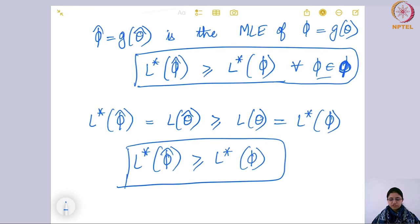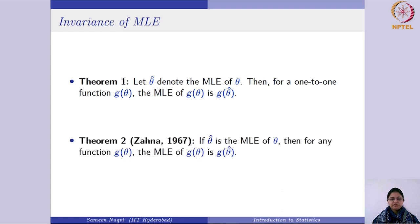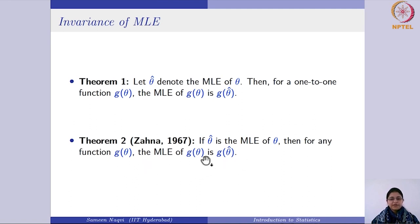Whenever you have a one-to-one function, by this result the MLE is simply transformed through that function. Furthermore, a result by Zehna (1967) extends this: if theta-hat is the MLE of theta, then for any function g(theta) — not necessarily one-to-one — the MLE of g(theta) is g(theta-hat). This is a very powerful generalization of the invariance property.